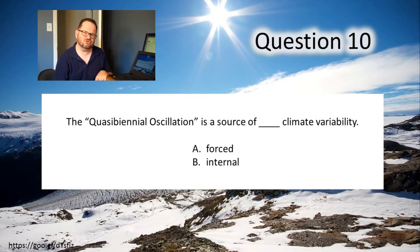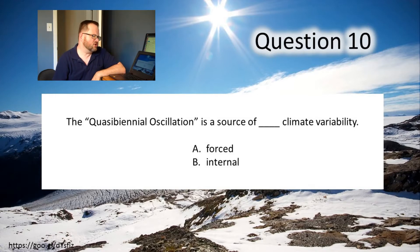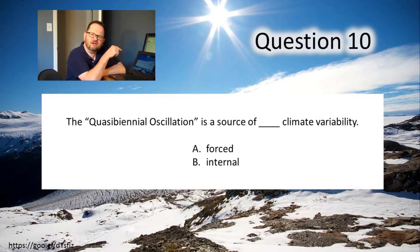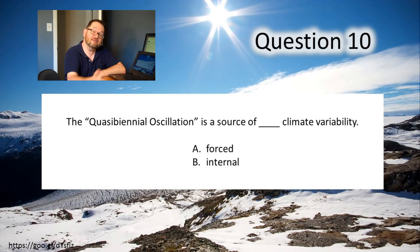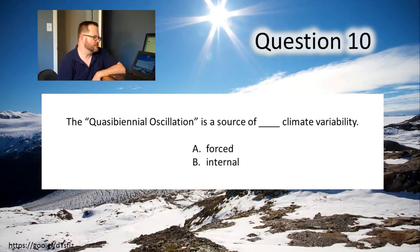Okay, this has been a really long lecture. Let's answer a couple quick questions before we're done. Question 10: the quasi-biannual oscillation is a source of blank variability — forced or internal? By the way, I realize I didn't explain the word quasi-biannual: it means almost two years. The period of the oscillation is 26 months, so quasi-biannual oscillation means approximately two years. Is it a forced or an internal source of climate variability? Make a choice from those two options and get some feedback before you move on to question 11.